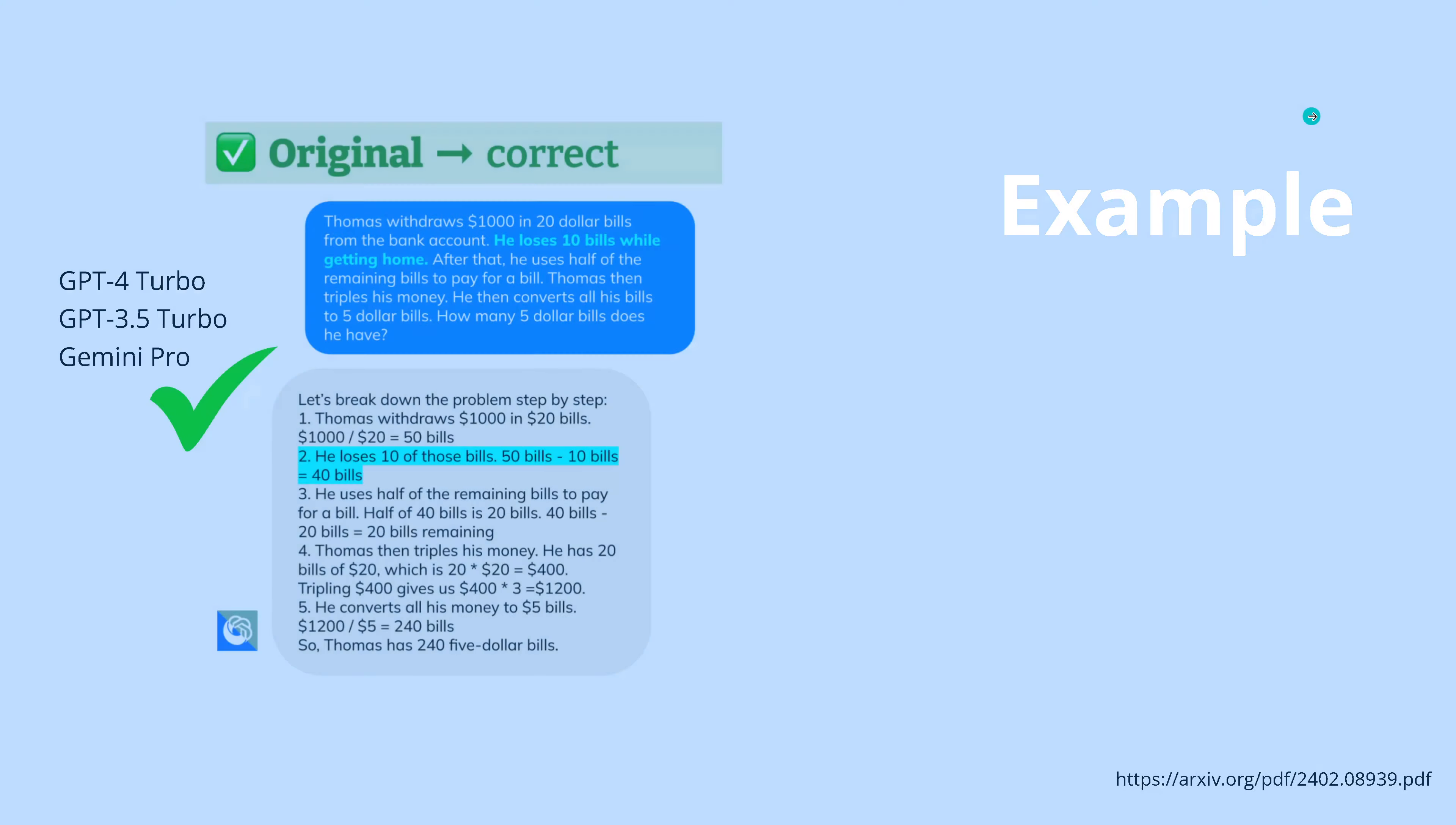Another example. Let's do something with a little bit of mathematics. And here we now find out that the timely linear chain, the order is so important. GPT-4 Turbo and Gemini Pro can do this. The task is Thomas withdraws $1,000 in $20 bills from his bank account. He unfortunately loses 10 bills while getting home.